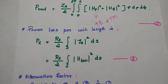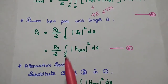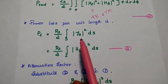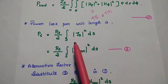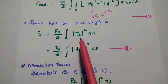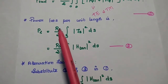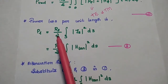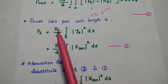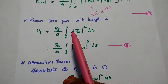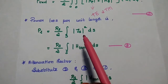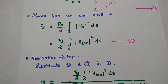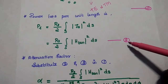Next, we are going to find out the power loss per unit length. Here PL equals RS/2 times the surface integration of JS squared dS. JS is the surface current density. The loss is due to the resistive component, so we consider the surface resistance of the waveguide. This current density is nothing but the tangential component of the magnetic field. Consider this as the third equation.